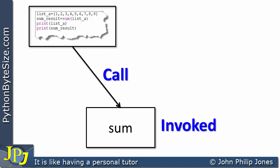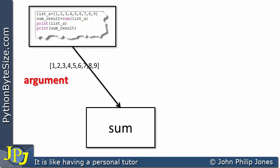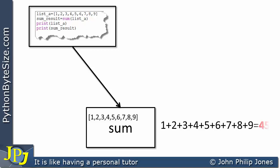There is a mechanism between the call and the function invoked, and what we're going to see is we're going to be passing in an argument, and there's the argument, which is the list going in to the sum. The sum will now add up all of the items in the list, giving 45.